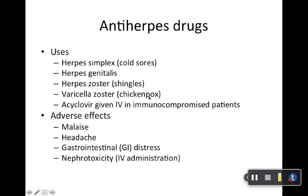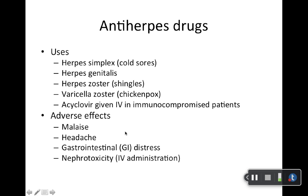Acyclovir is used for herpes — cold sores (herpes simplex), genital herpes, herpes zoster (shingles), and chickenpox (varicella zoster). In immunocompromised patients who are more susceptible to herpes infections, acyclovir is typically given IV because of poor oral bioavailability — better absorption is achieved with IV administration.